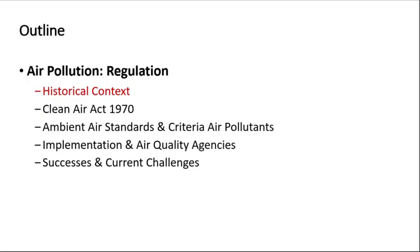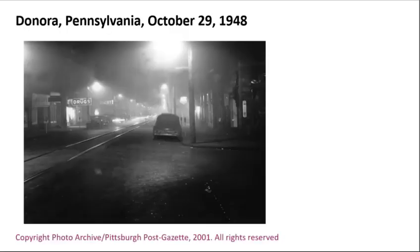Turning first to the historical context: seen here is a picture of the town of Donora, Pennsylvania on October 29, 1948. Donora, about 30 miles south of Pittsburgh, was among many industrial Midwest towns of this era. It contained many steel mills, smelters, and coal-fired power plants, situated in a valley along a river where barges transported raw and finished goods.